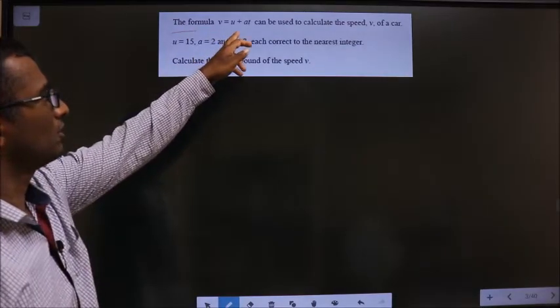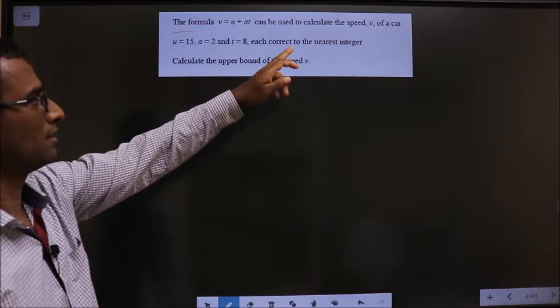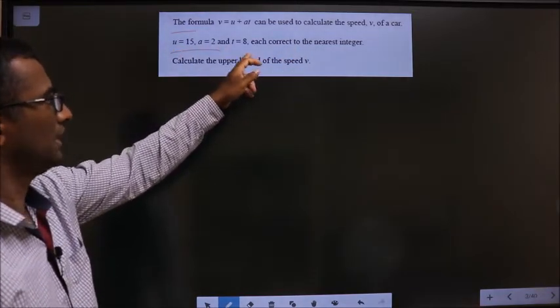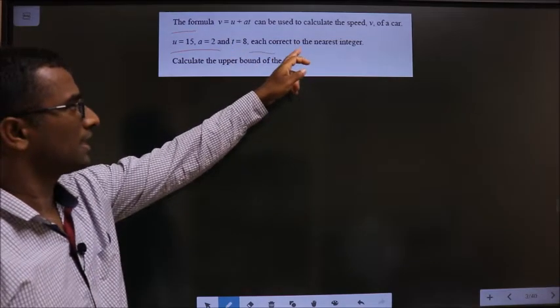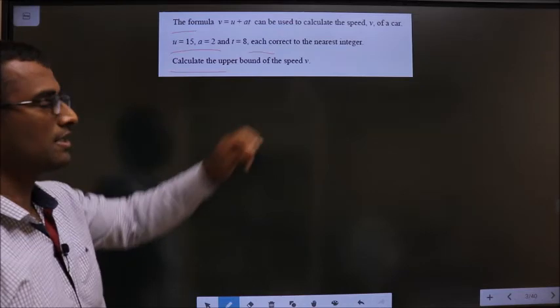The formula V equal to U plus AT can be used to calculate the speed V of a car. U equal to 15, A equal to 2 and T equal to 8, each corrected to nearest integer. Calculate the upper bound of the speed V.